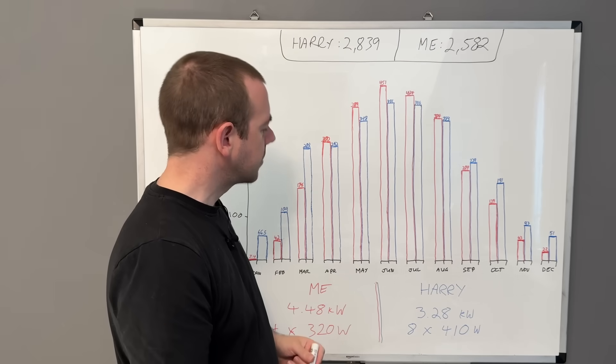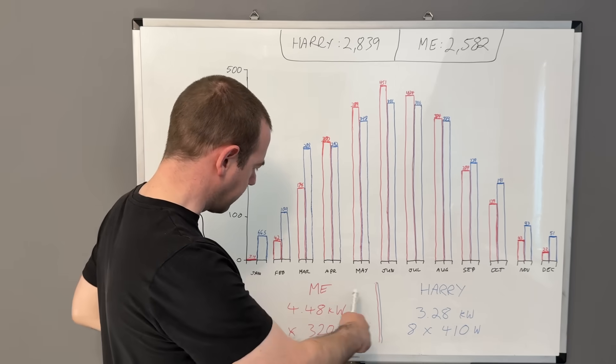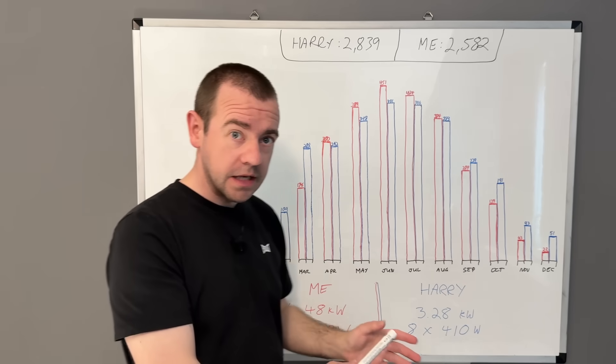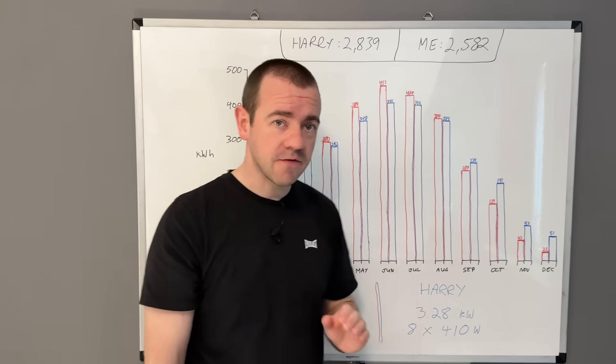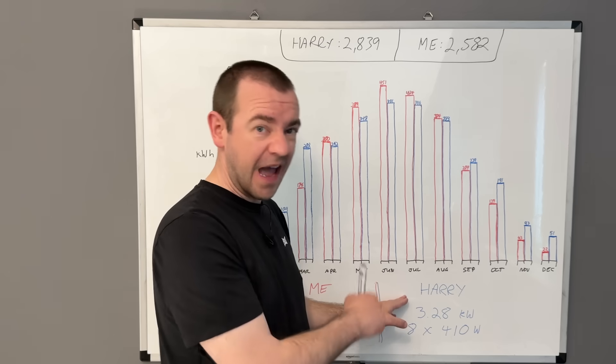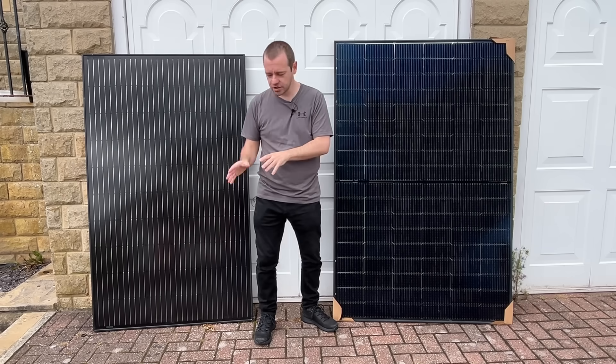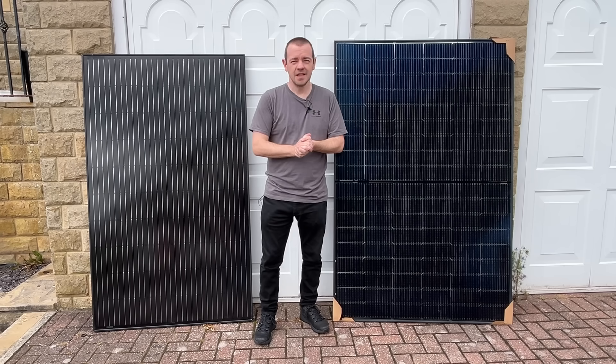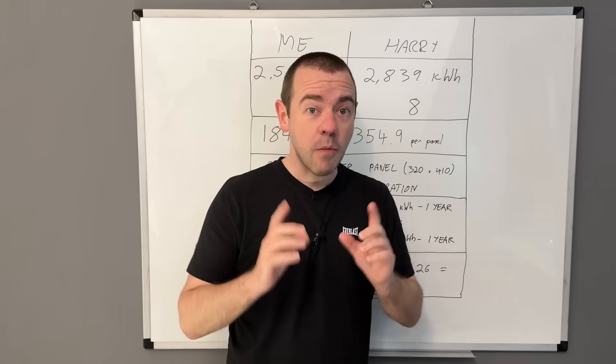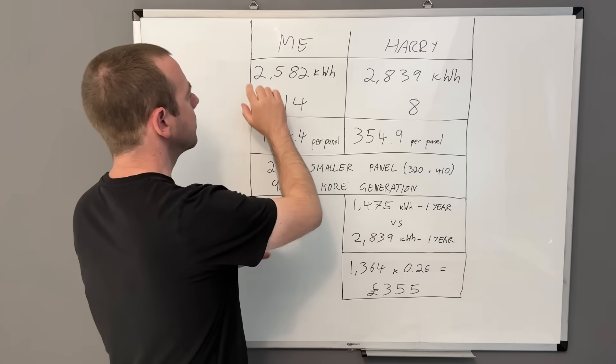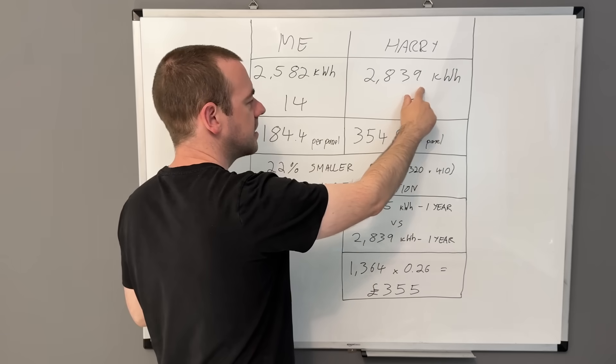How much extra did he pay? There's no point comparing it to mine because I have a much bigger array done a couple years before his. But it was a £1,500 difference between an off-the-shelf version for 8 panels compared to the one he ended up with.